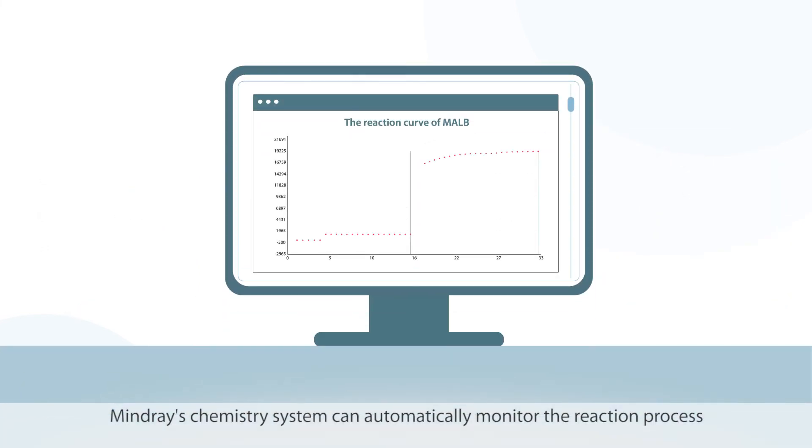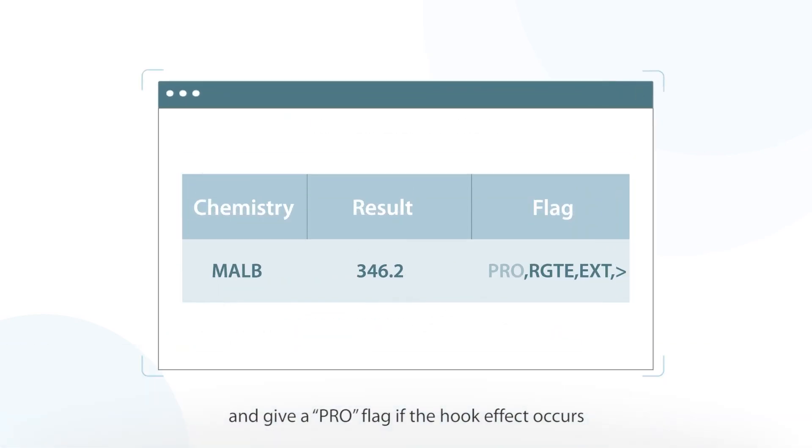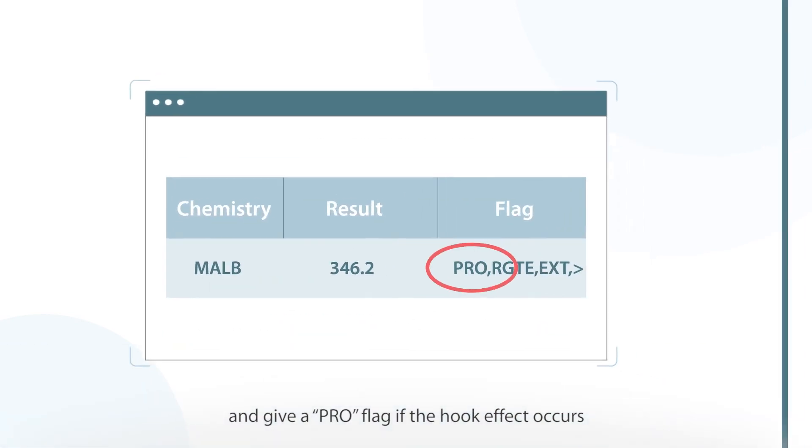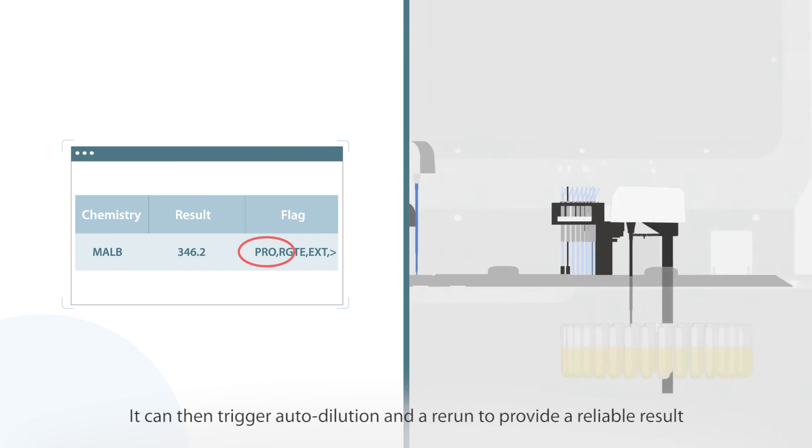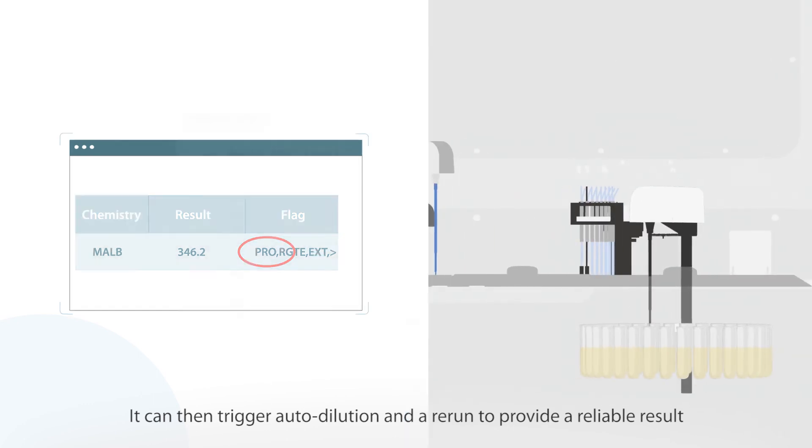Mindray's chemistry system can automatically monitor the reaction process and give a pro-flag if the Hook effect occurs. It can then trigger auto-dilution and a rerun to provide a reliable result.